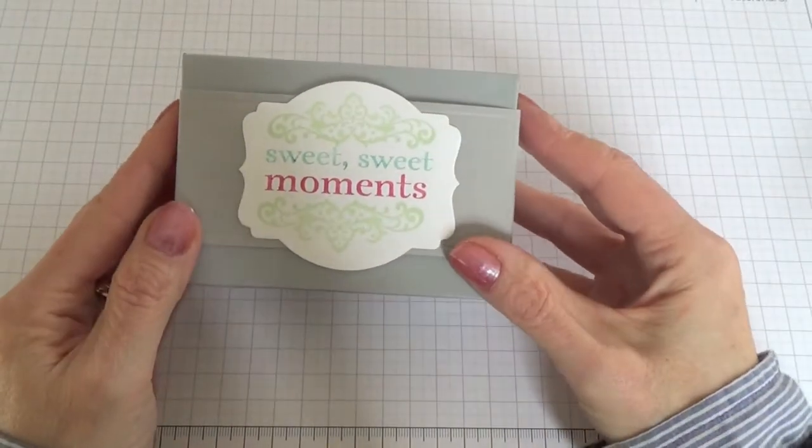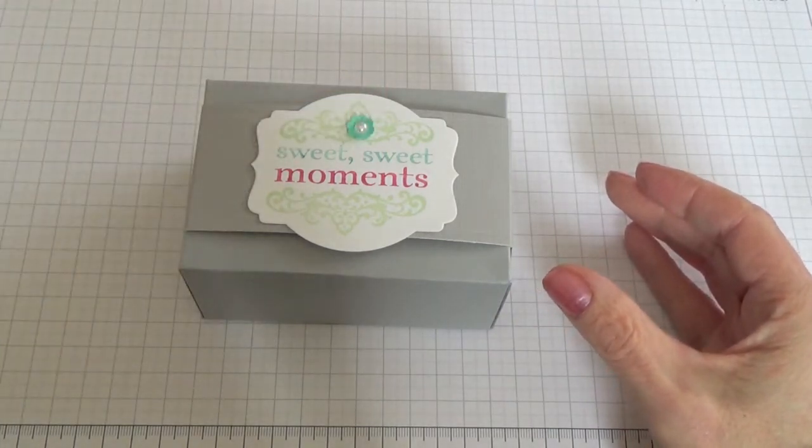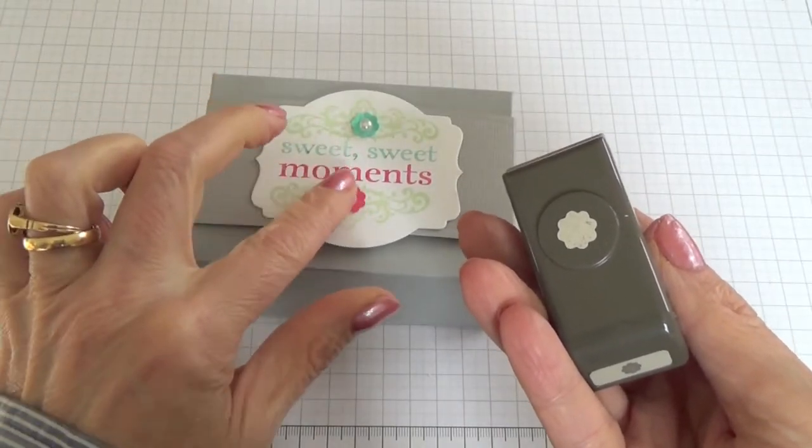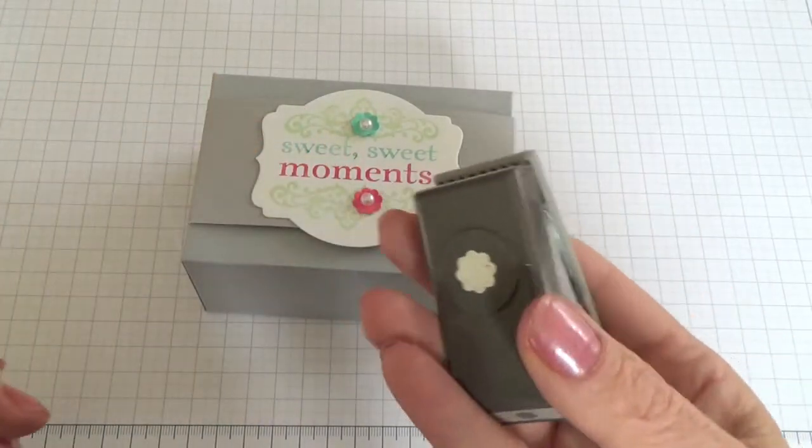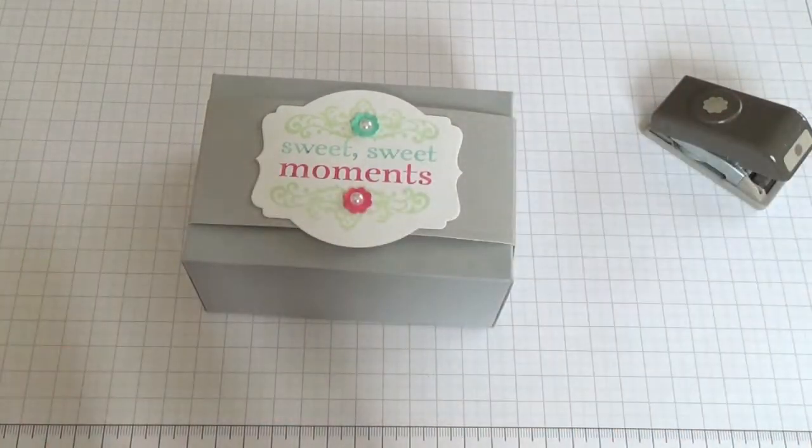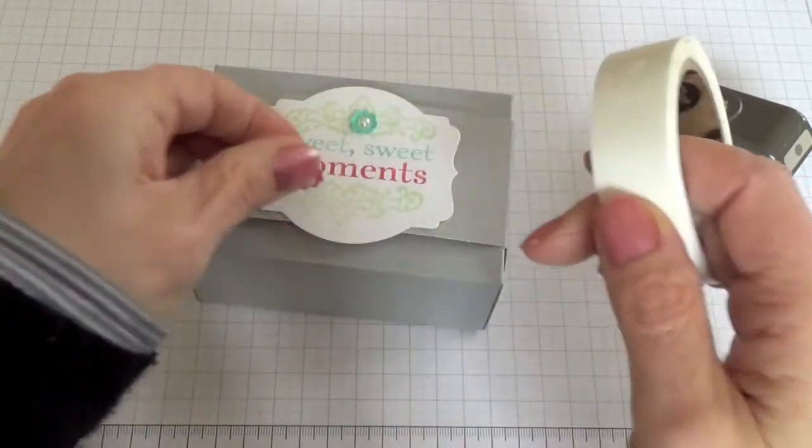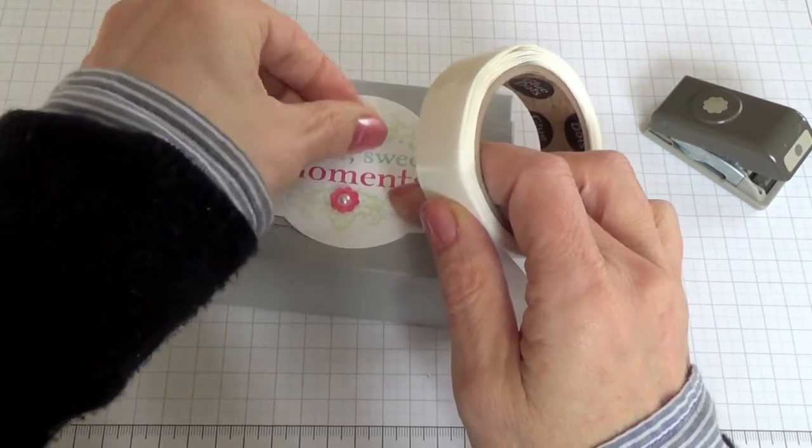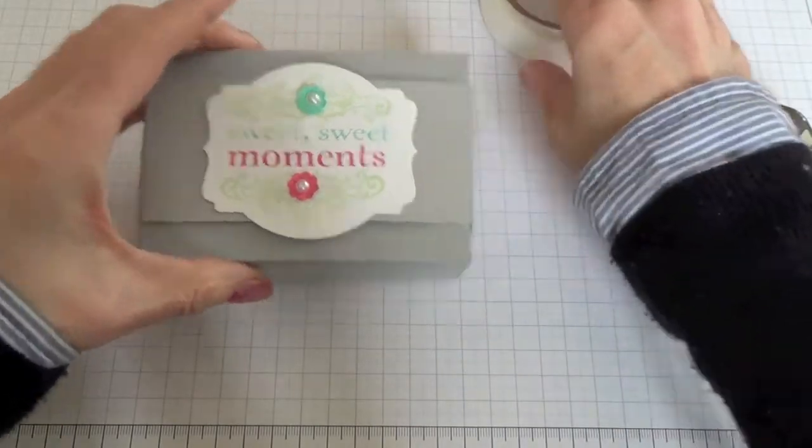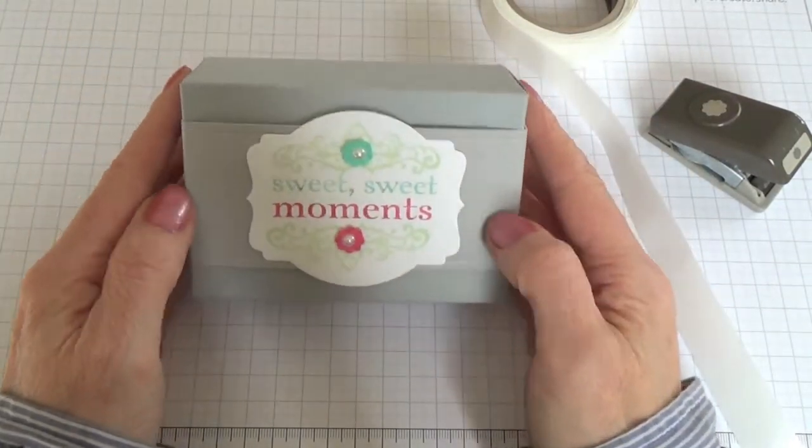You can decorate these boxes as you choose, but I like to punch out some little flowers using the itty bitty flower punch from the itty bitty punch pack. And just pop a little pearl in the middle of those. You can just attach them with glue dots or a little dot of Tombow. And they just look rather sweet on there. And there we go. My basic box with a belly band.